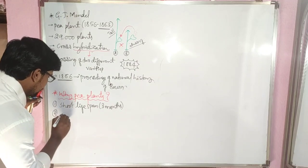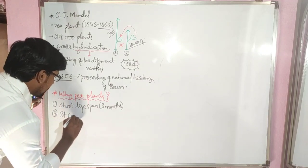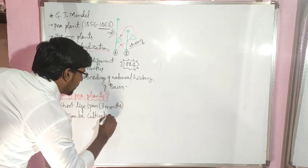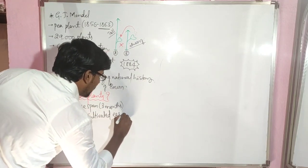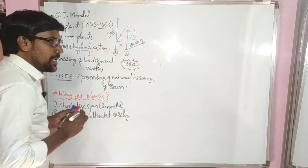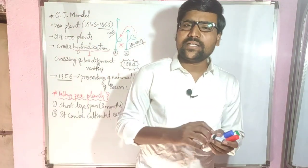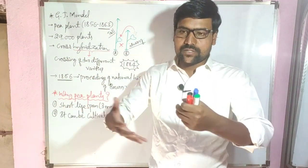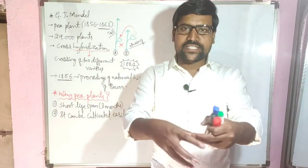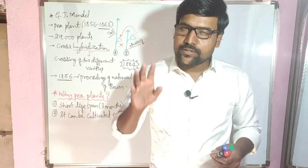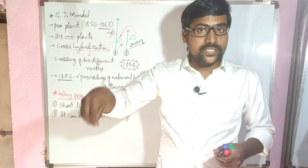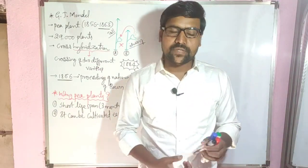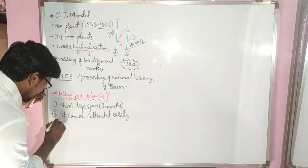The second reason is that pea plants can be cultivated easily. We usually call them garden pea plants. Even in a small area or just in a pot, pea plants can be grown. That is a major reason.